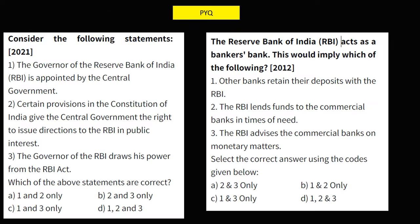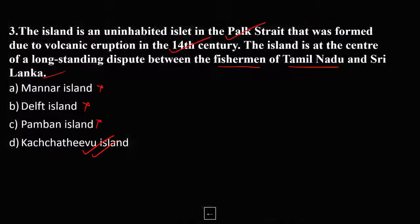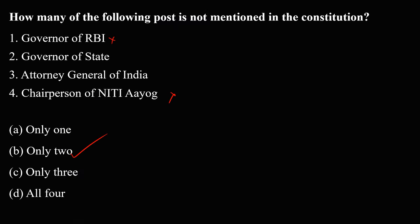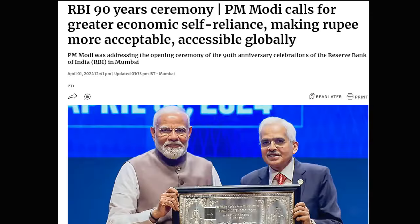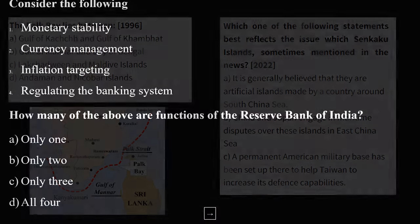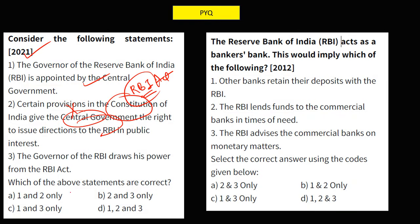Let me discuss some PYQs on this topic. A 2021 question on RBI: Statement 1 — the Governor of RBI is appointed by the central government — is correct. Statement 2 — certain provisions of the Constitution give the central government the right to issue directions to RBI in public interest — is incorrect; the Constitution does not give that right. It is given in the RBI Act, not the Constitution. So statements 1 and 3 are correct. The Governor of RBI draws his power from the RBI Act.